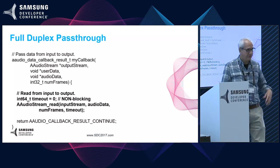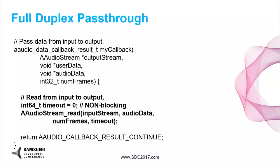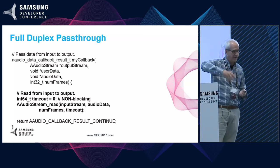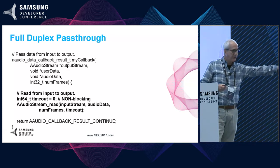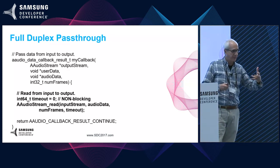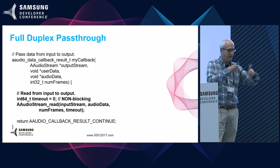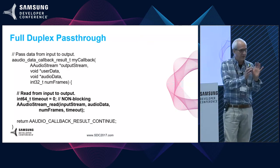If you want to do full duplex — for example, writing a guitar processor where guitar data comes in and processed audio goes out — if you have two callbacks, the problem is they don't communicate with each other. What you want to do is use an output callback to determine all your timing, and then in your output callback you do a read from the input stream. If you do a read with no timeout, it will immediately grab the data, you process it, and send it out. If at the beginning you pull a bunch of data, you can get down to a very, very low latency.